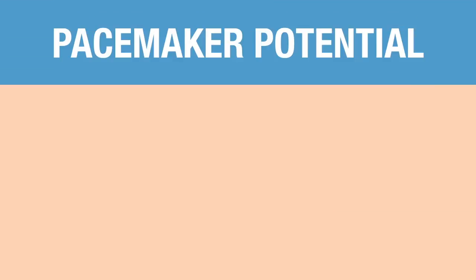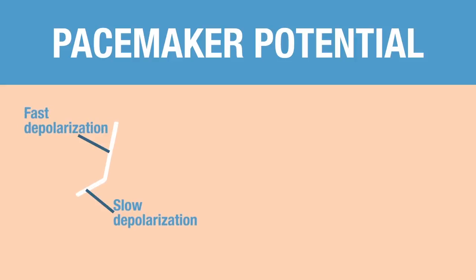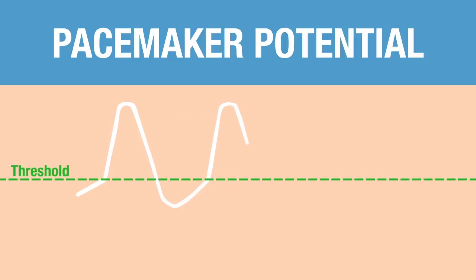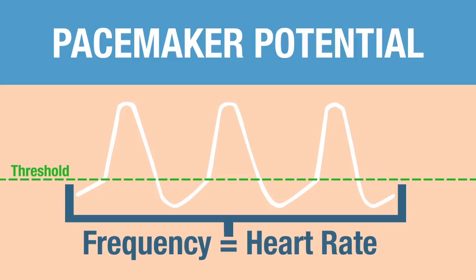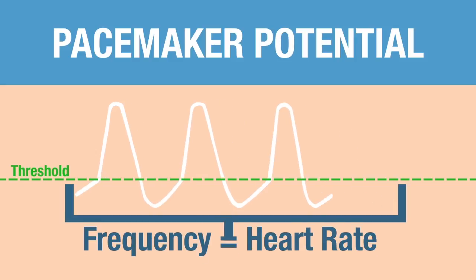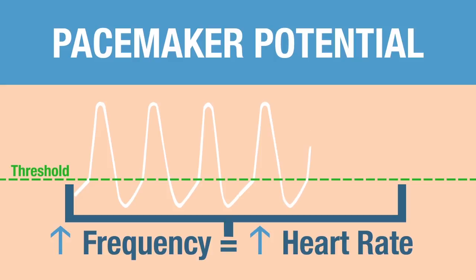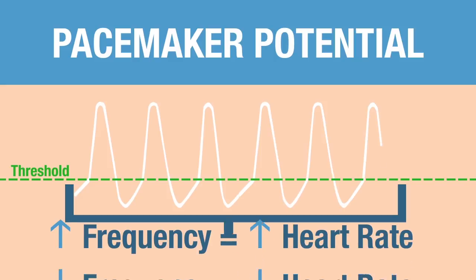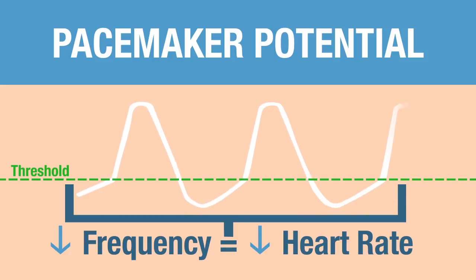Remember what a pacemaker potential looks like — be sure that you can draw one. It consists of slow depolarization, fast depolarization, then repolarization, repeating cyclically. The frequency of these pacemaker potentials is what determines heart rate. If you increase the frequency, heart rate goes up; if you decrease the frequency, heart rate goes down.